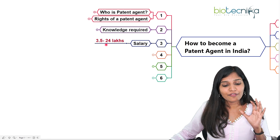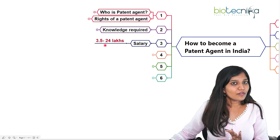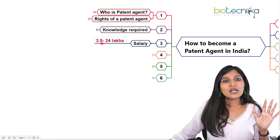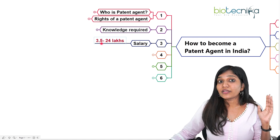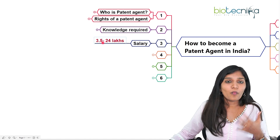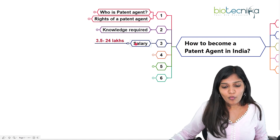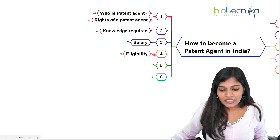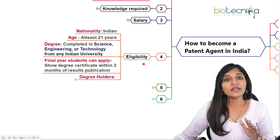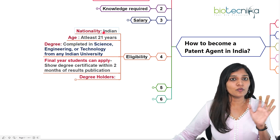The salary is very important since this is a government profile. As an initial fresher, you're going to get almost 3.5 lakhs, and it gradually increases to 24 lakhs per year, which means almost 2 lakhs per month — a wonderful opportunity.